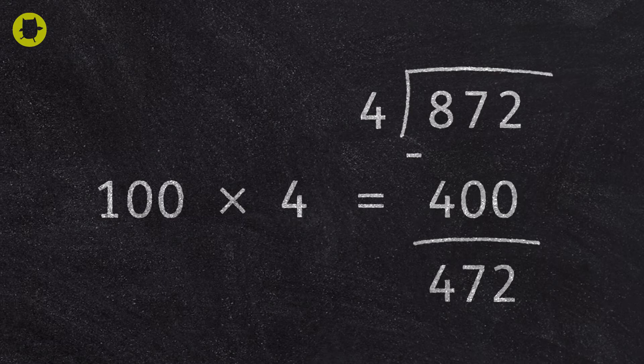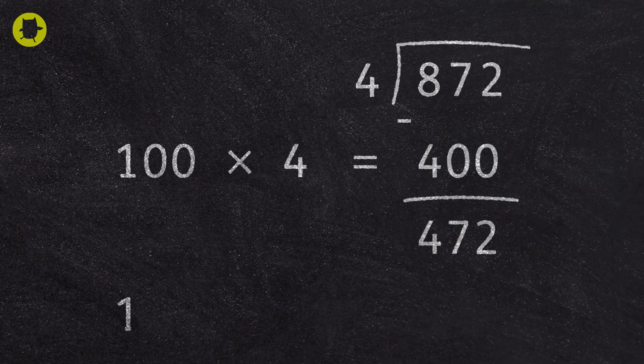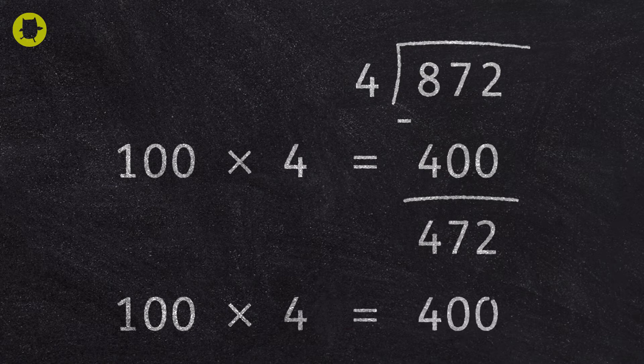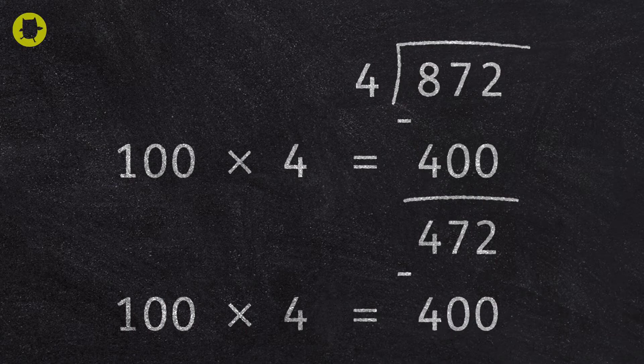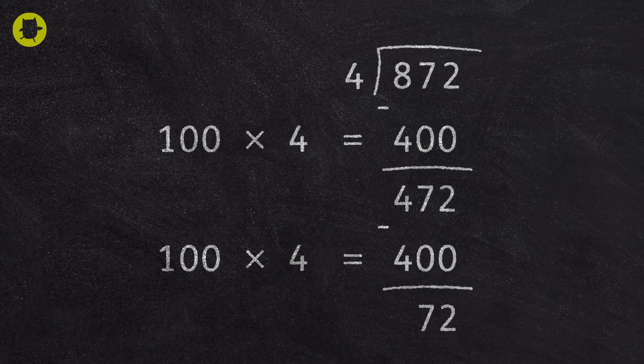We then have to look at how many fours go into 472. We think about what we could multiply 4 by easily. We already know that 100 multiplied by 4 is 400, so we can do this again. We subtract the 400 from 472 and we're left with 72.